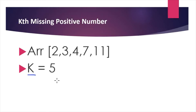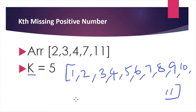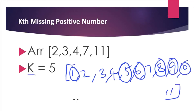For example, consider the array in sorted order including the missing numbers: one, two, three, four, five, six, seven, eight, nine, ten, eleven. Checking the given array: one is missing, two, three, four are there, five, six, seven is there, eight, nine, ten, eleven is there. The missing numbers are counted: one, two, three, four, five — so the missing fifth element is nine, and the output is nine.